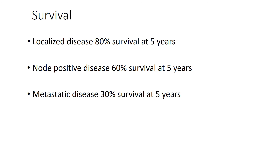The outcomes for this disease are quite good. Localized disease shows greater than 80% survival at five years. Node-positive disease drops to about 60%, and metastatic disease to about 30% at five years — showing this is an effective therapy, yet there's room to improve. Thus far, we have not seen any improvement in these outcomes with the addition of chemotherapy beyond the standard regimen, although additional agents are currently under investigation.